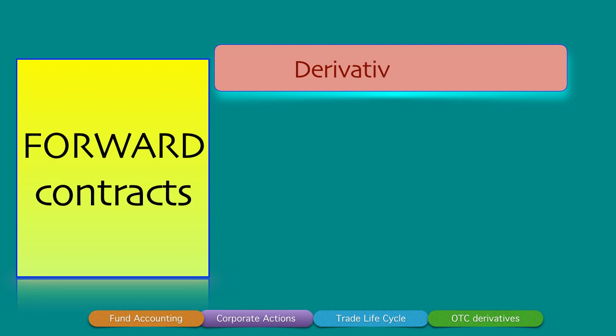A forward contract is a derivative product. Like all derivative products, its price is derived from the price of the underlying asset, implying that there is an underlying asset and then there is a derivative contract. The most common underlying assets for forward contracts are foreign exchange and commodities. For example, you have USD/INR in the spot market and in the forward market, and USD/JPY in the forward and spot markets.